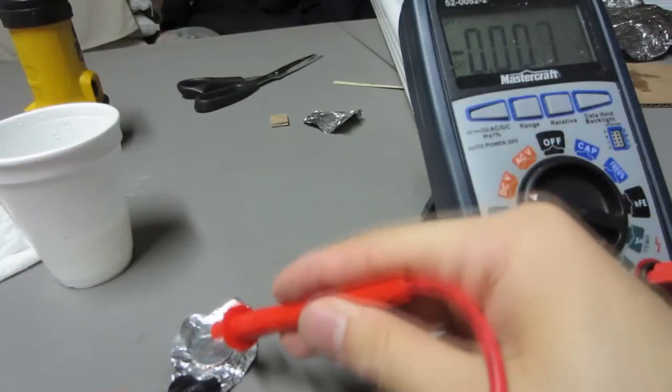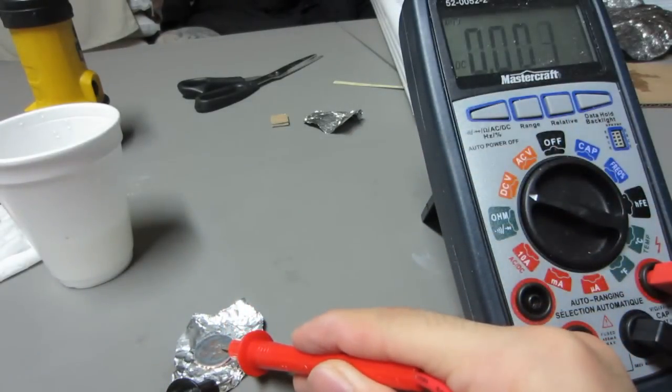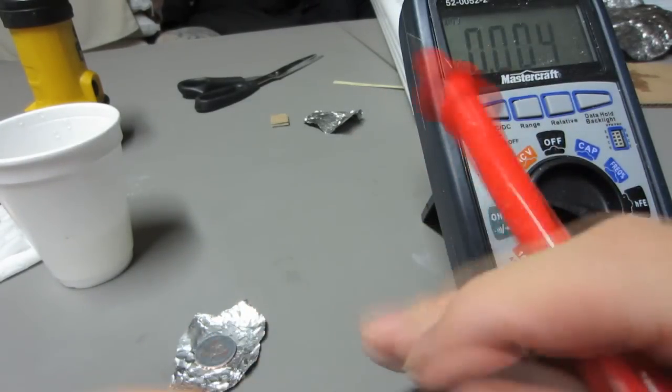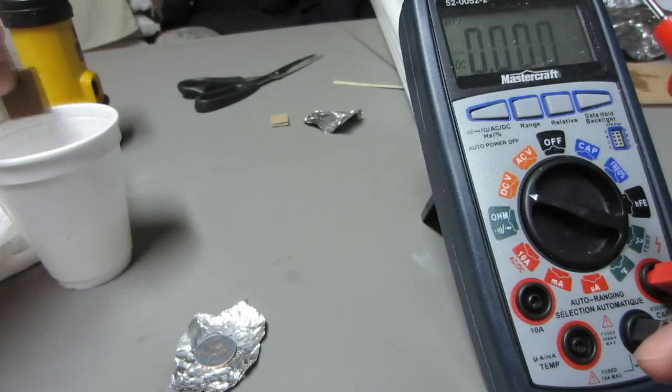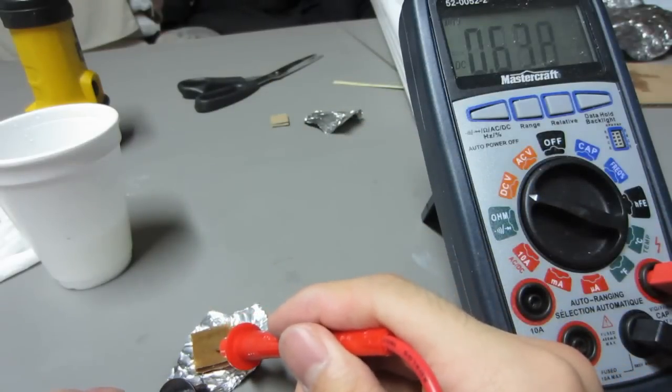After that I went ahead and grabbed my multimeter and tested the battery to see if it had any voltage on it. At first with no salt bridge you can clearly see that it was producing zero volts. But after I placed that juicy cardboard on top of it, it started producing 0.8 volts. Now that's crazy.